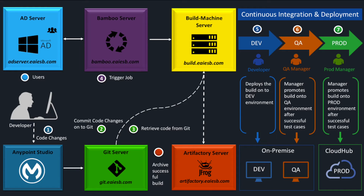It comprises various tools. Anypoint Studio is a development editor to develop new project code. Git server is where developers develop the code and push to GitHub, and the system gets the data from Git. JFrog Artifactory archives the golden copy of each promoting code. Active Directory maintains all the users and groups information who have access to promote the code.